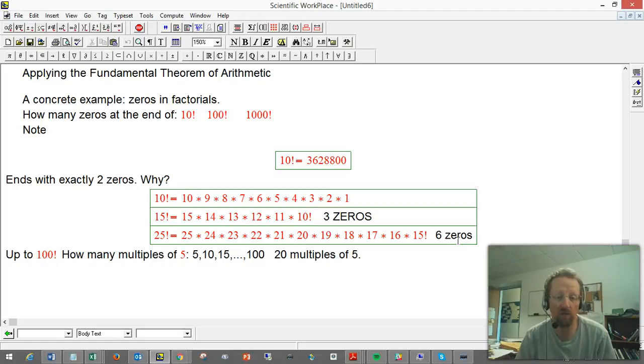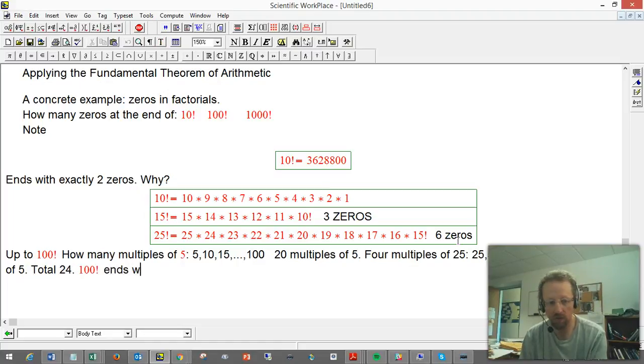Now, notice that's including 25, and 50, and 75, and 100, which are multiples of 25. So I've included one of the factors of 5 that come from those things, but I haven't included the extras. So there's four multiples of 25, namely 25, 50, 75, 100. They have 5 squared hiding in them. I've already counted one of them, but I need to count those four extras. So we get four extra factors of 5. So total, we're getting 24. I claim 100 factorial ends with 24 zeros.